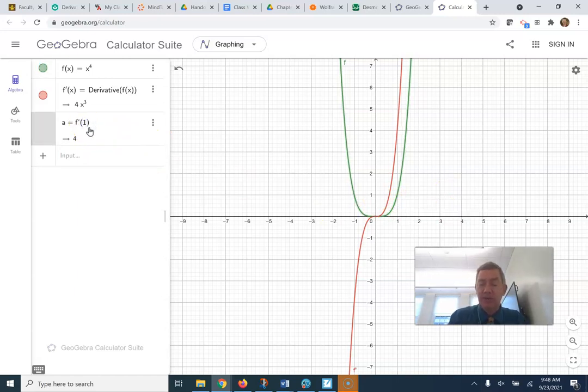If we want it at negative 1, just make it negative 1. The slope is negative 4. The slope is negative over here. So that's how you find a derivative with GeoGebra. Very straightforward. Start typing derivative and define it as f of x.